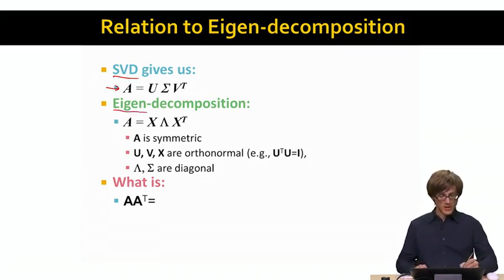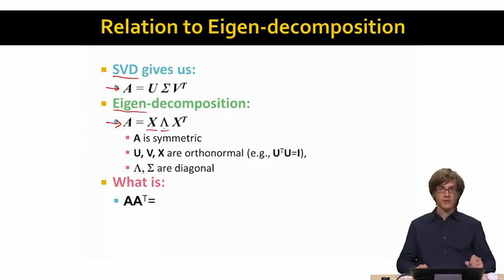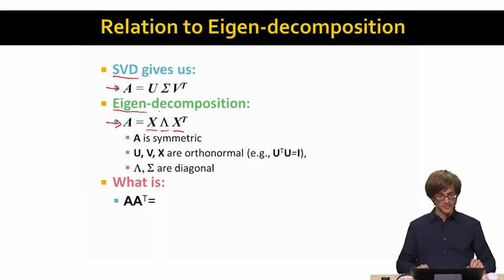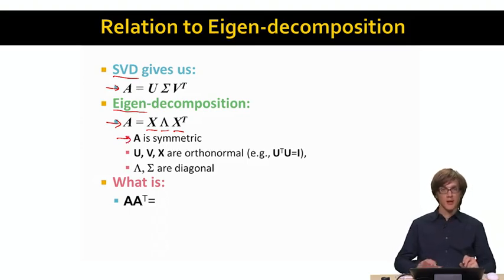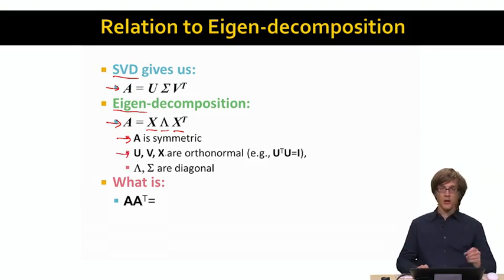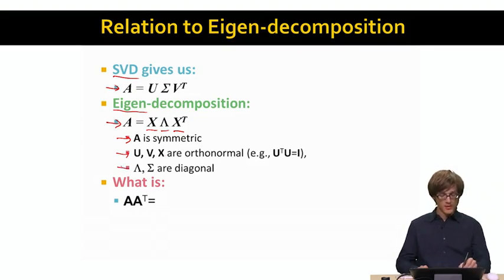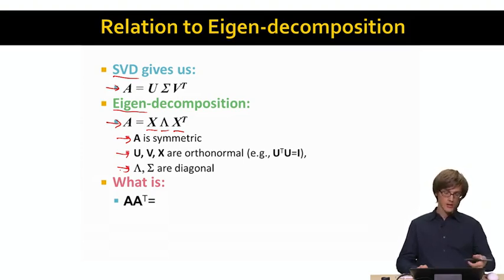Eigenvalue decomposition is more constrained. Given some matrix A, we represent it as X times lambda times X transpose. So here we only have a product of two distinct matrices, lambda and X. For eigendecomposition to even exist, A has to be symmetric — meaning values above the diagonal equal values below the diagonal — while SVD does not have this constraint. Both SVD and eigenvalue decomposition require that all matrices are column orthonormal, meaning columns are orthogonal to each other and have unit length. And in both cases, sigma and lambda are diagonal matrices.